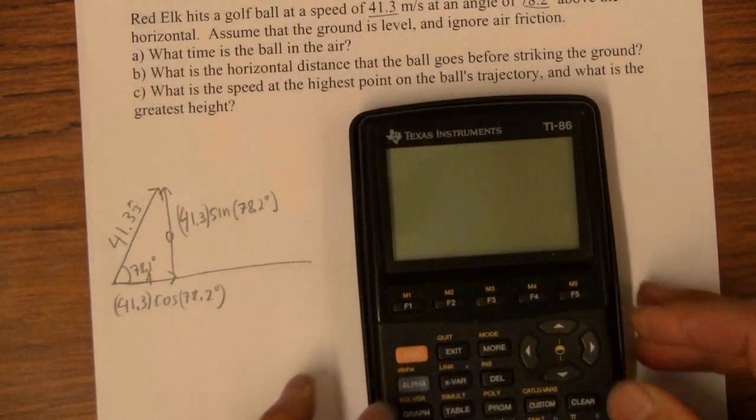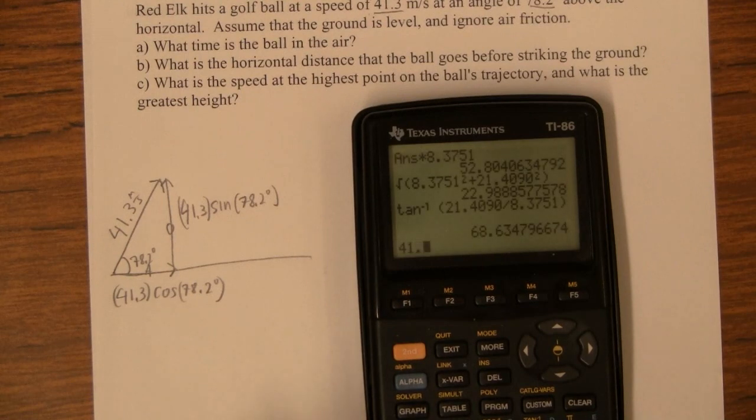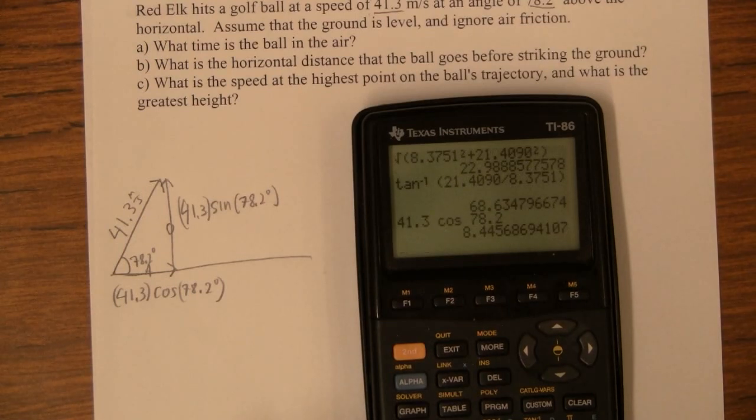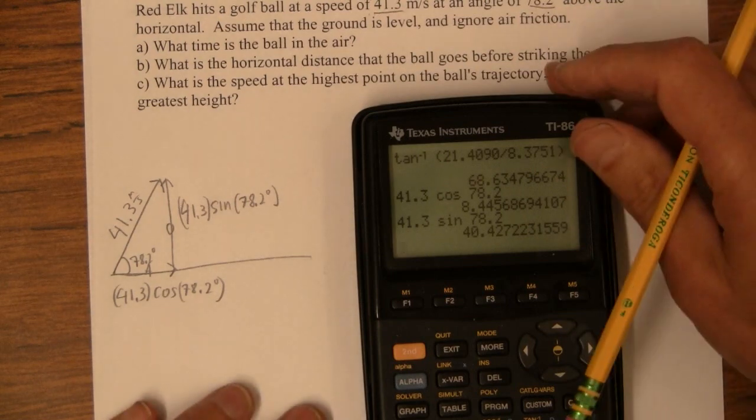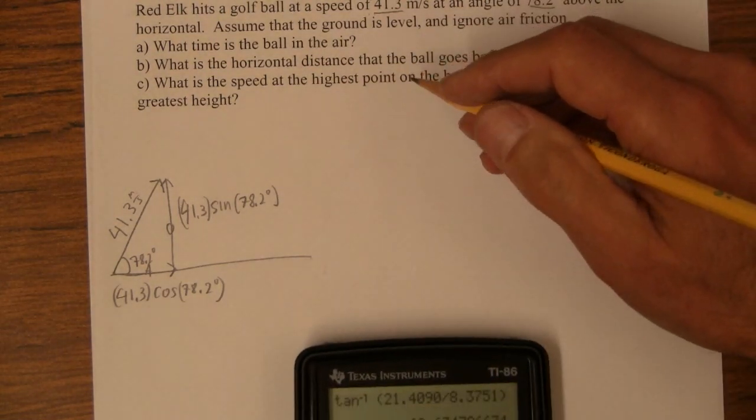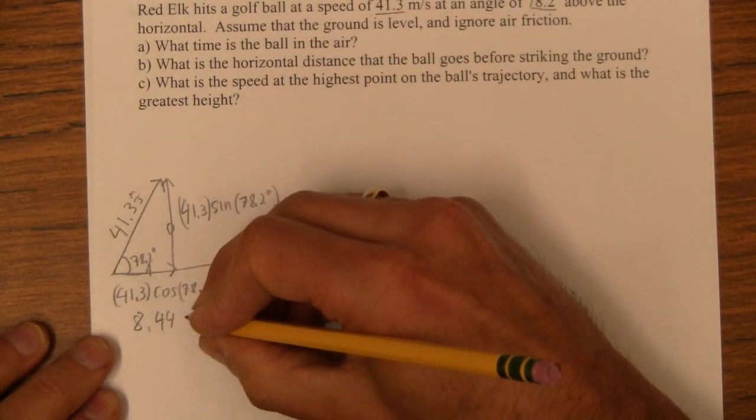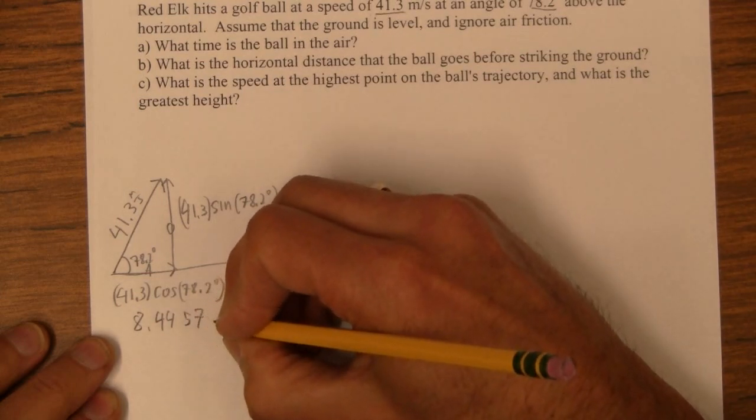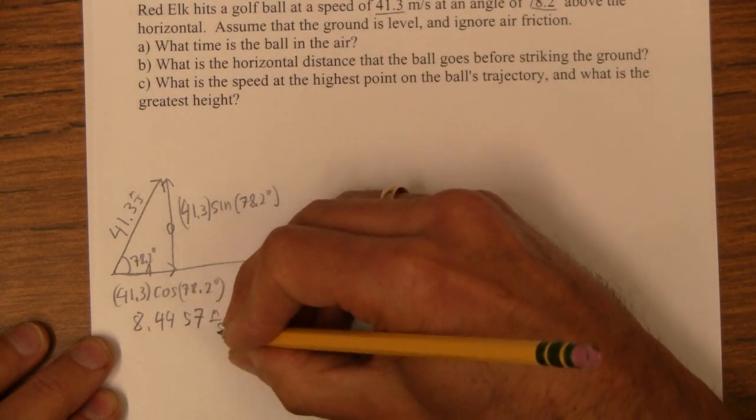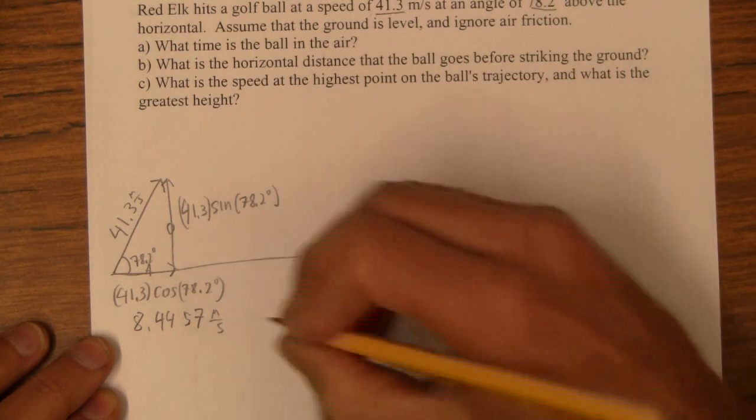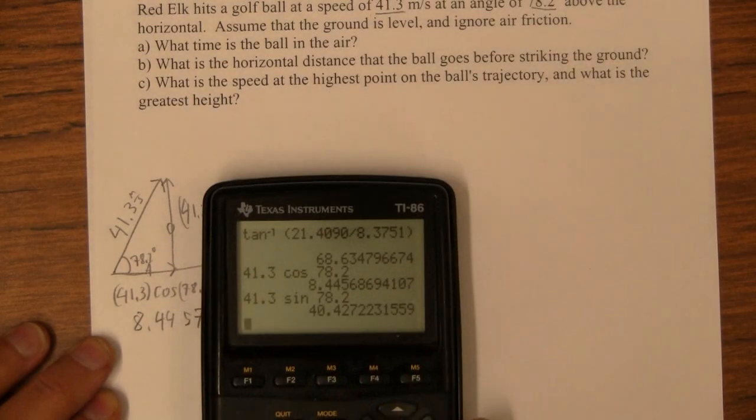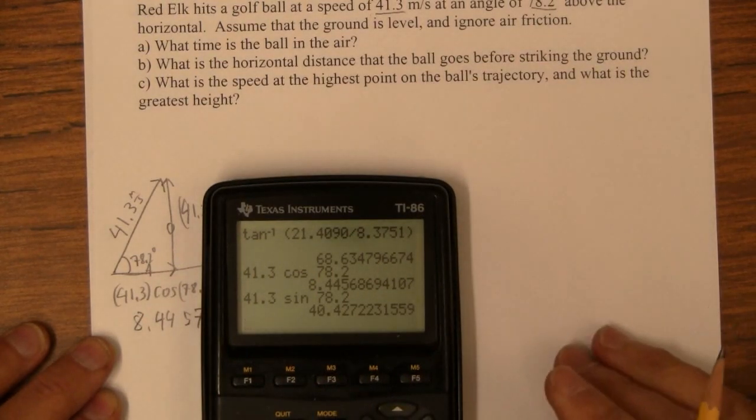So let's bust that out on the calculator here. 41.3 cosine 78.2. So I'm getting for the horizontal velocity, I get that to be 8.4457 meters per second.